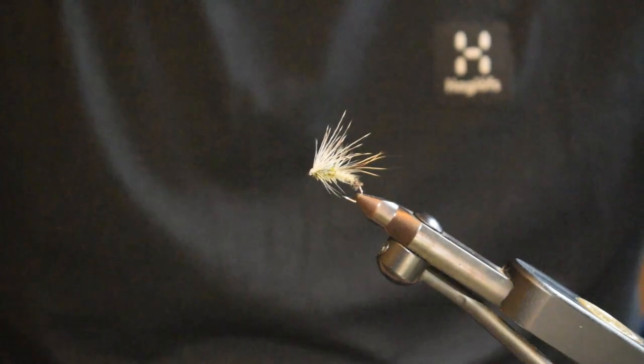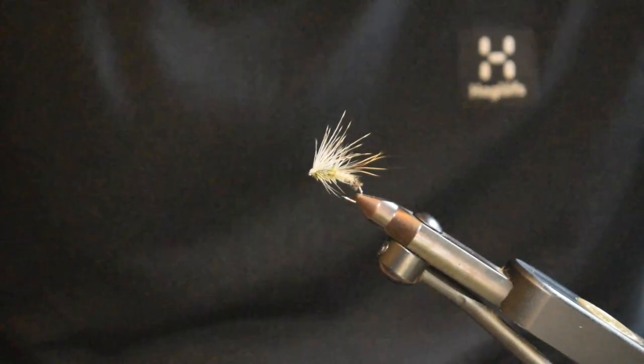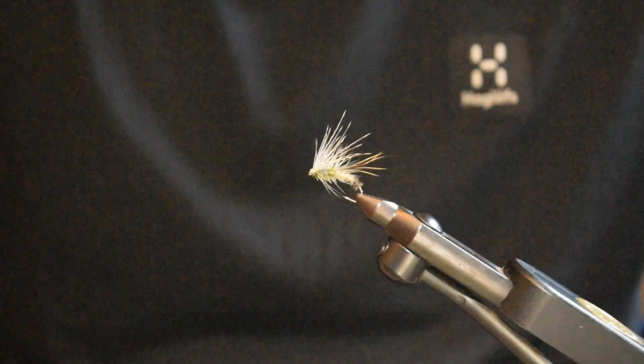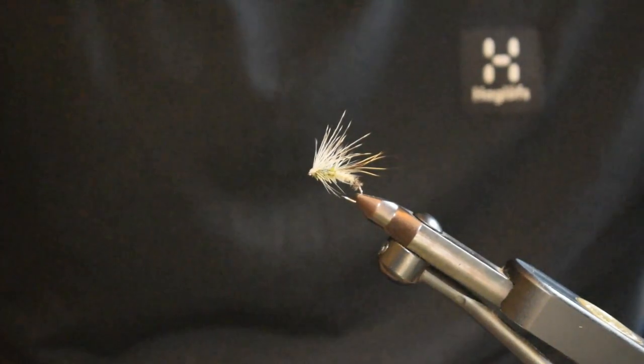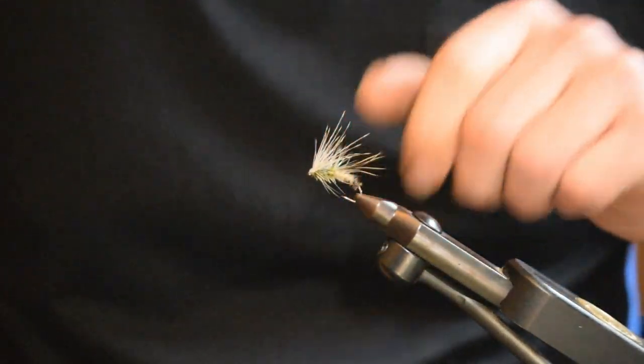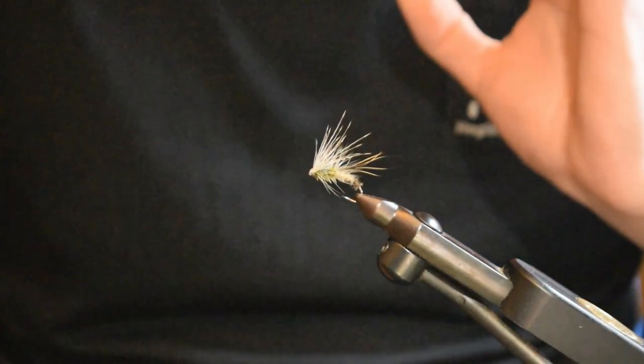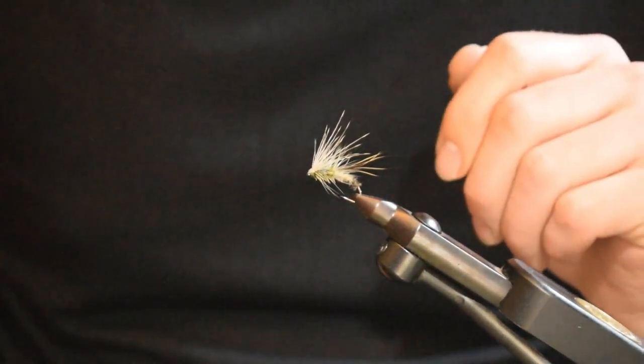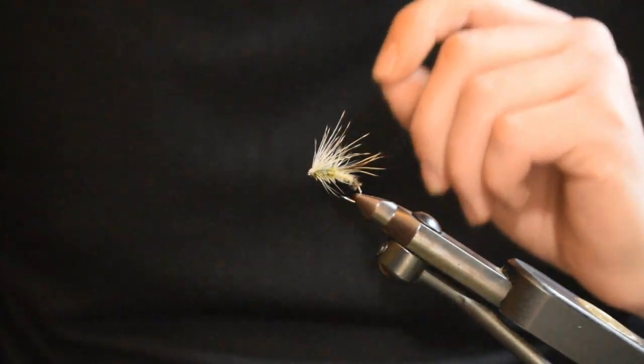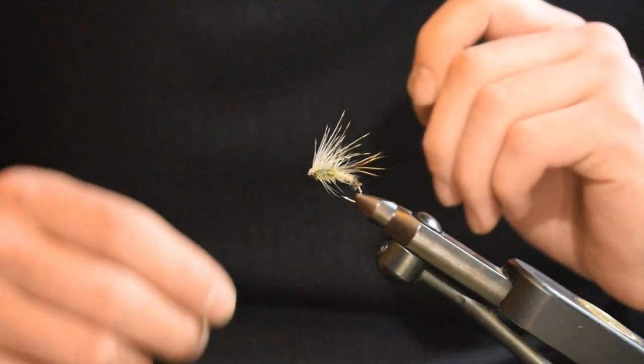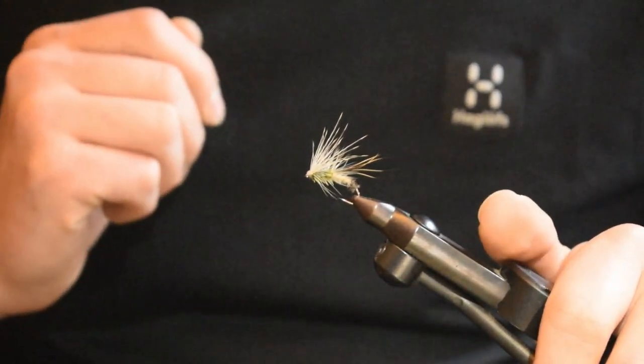Hello everybody and welcome to my YouTube channel. Today I'm going to tie an Emerger Ephemera Danica pattern, also known as a mayfly. This is probably one of my favorite Emerger patterns for these big flies. I've caught a lot of great fish and my greatest so far is also my personal best on the dry fly at 56 centimeters. I'm going to show you how to tie them.